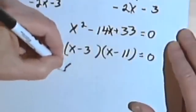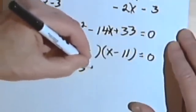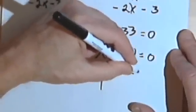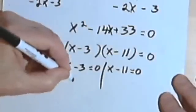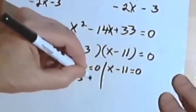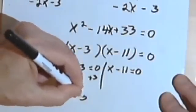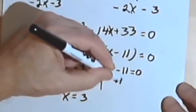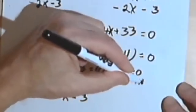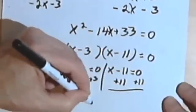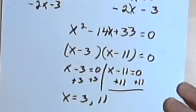So the last step is just to say that x minus 3 equals 0, and x minus 11 equals 0. And I'll add 3 to this and find out that x could equal 3. Or if I add 11 to the other equation, I'm going to find out that x could equal 11. So x equals either 3 or 11.